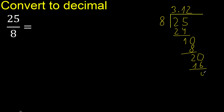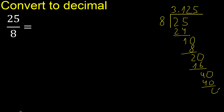Subtract. Complete 8 — 40. 8 multiplied by 5 is 40. Subtract: 0, 0.